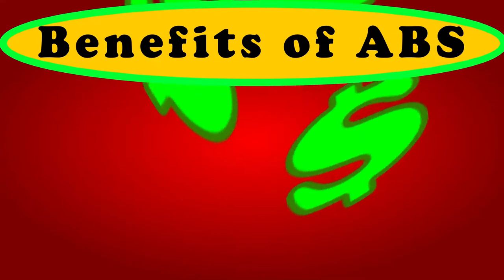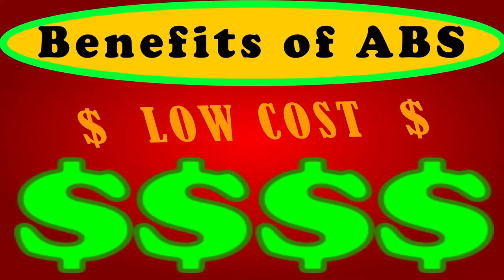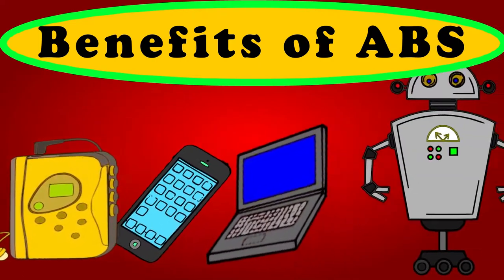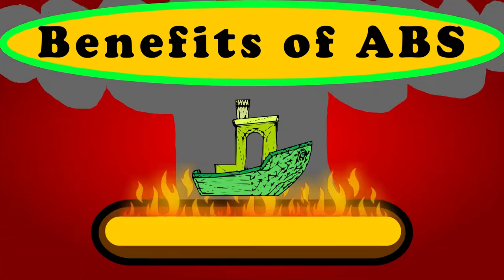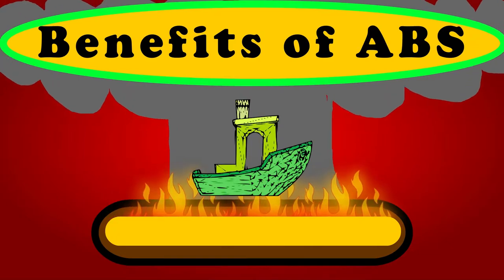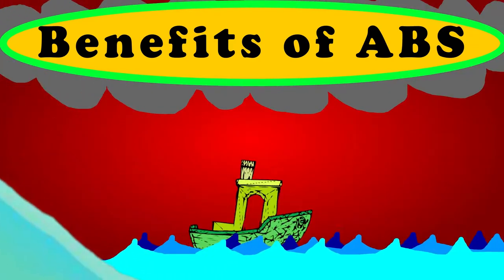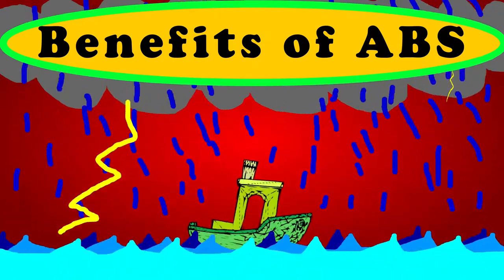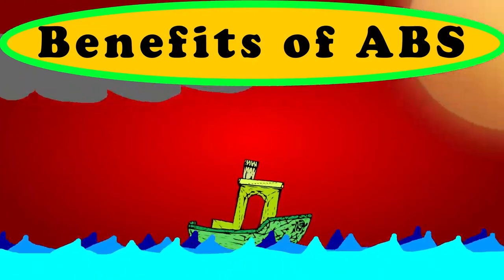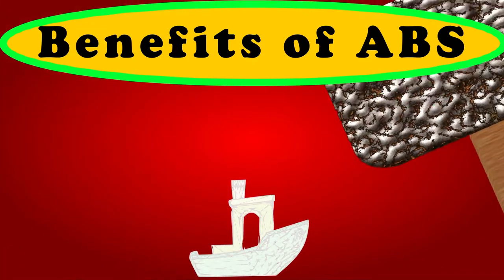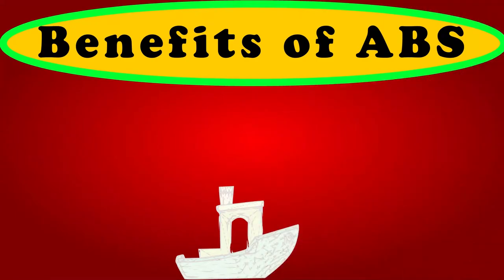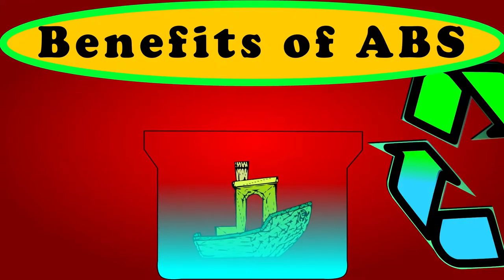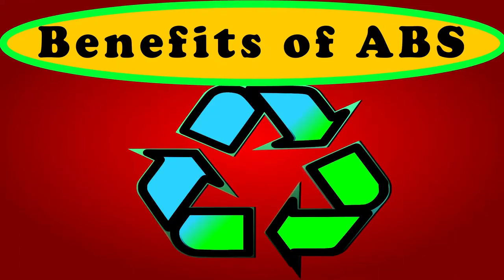Now let's get into some of the benefits of ABS. First of all, it's low cost. ABS is mass produced for a wide variety of applications, including automotive, aerospace, consumer products, and electronics. ABS has good heat resistance and can absorb a large amount of heat before deformation, warping, or failure. It also has good weather resistance and can survive in almost any weather condition, although it will lose color in direct sunlight. ABS has good impact resistance — it can take a hit and hold its form. It is also chemically smoothable with acetone, and ABS is recyclable in most areas.